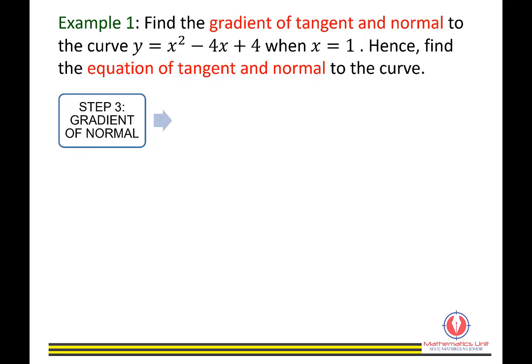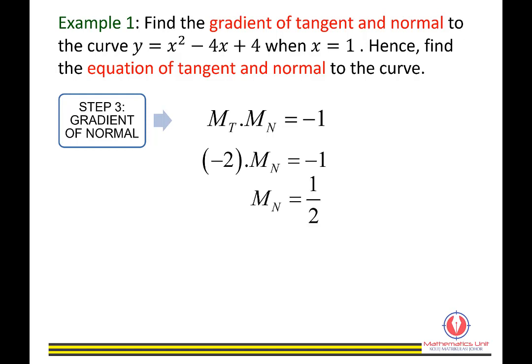Step 3: Find the gradient of normal. Using the relationship — Gradient of Tangent times Gradient of Normal equals negative 1 — and substituting gradient of tangent equals negative 2, we get gradient of normal equals 1 over 2.